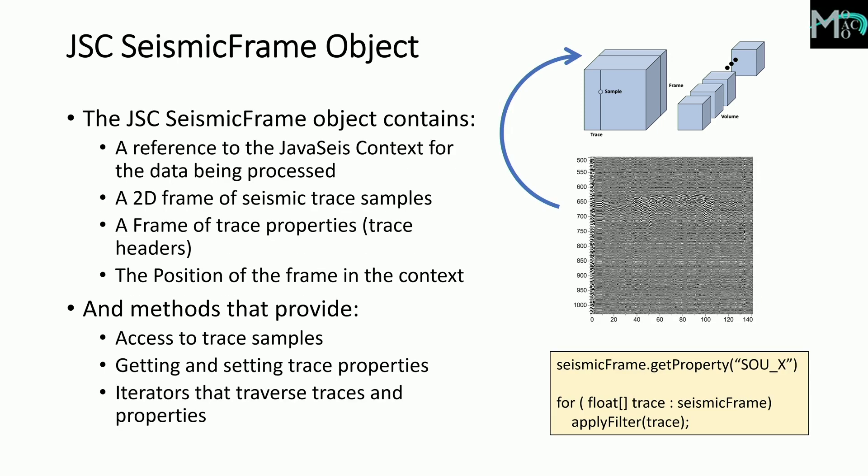A seismic processing compute task will require access to seismic data and trace headers. We define a seismic frame object that contains a reference to the JavaSeis context of the originating dataset, a 2D frame of traces, a 2D frame of trace properties, and a position object that defines the location of the frame in the JavaSeis context. Methods are provided to access trace samples, get and set properties, and obtain iterators that automatically traverse the frame in the code.